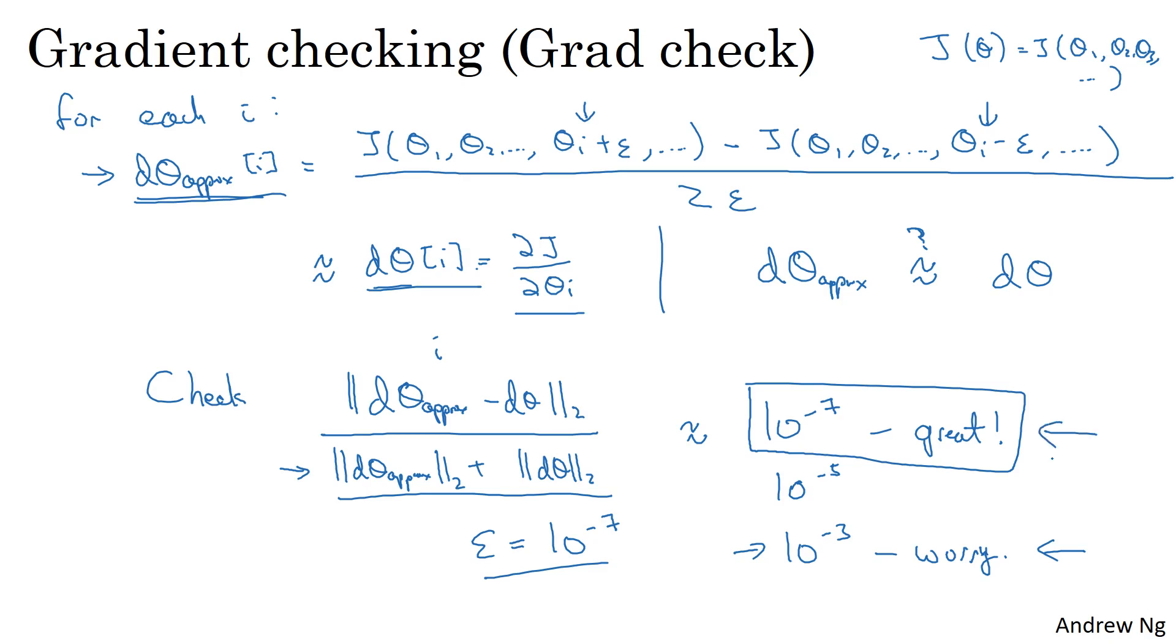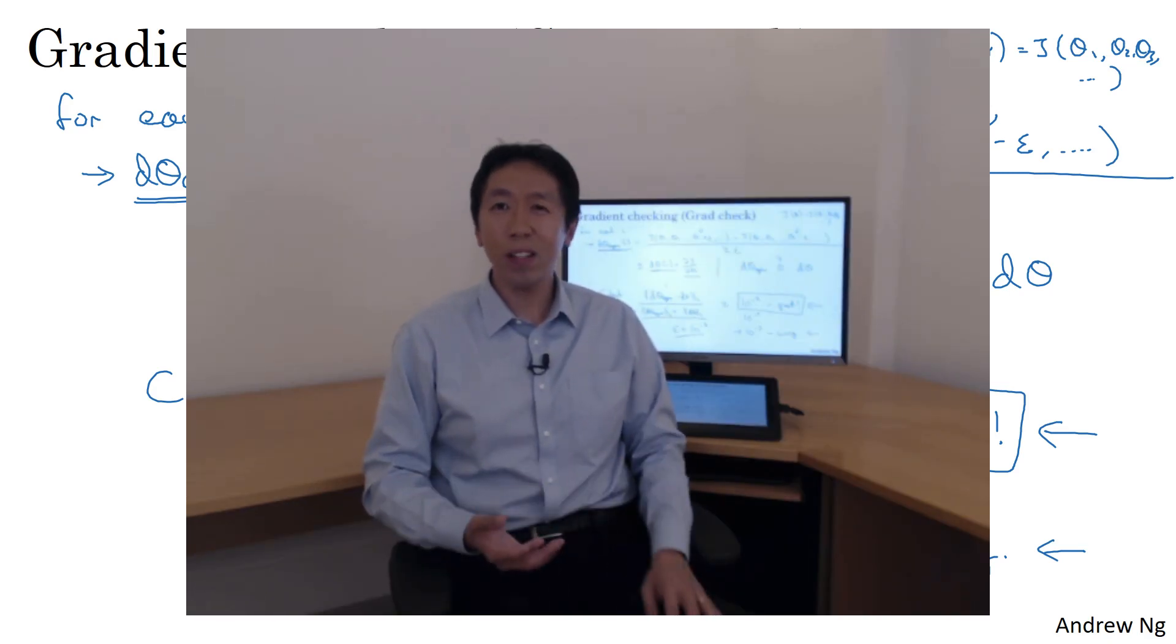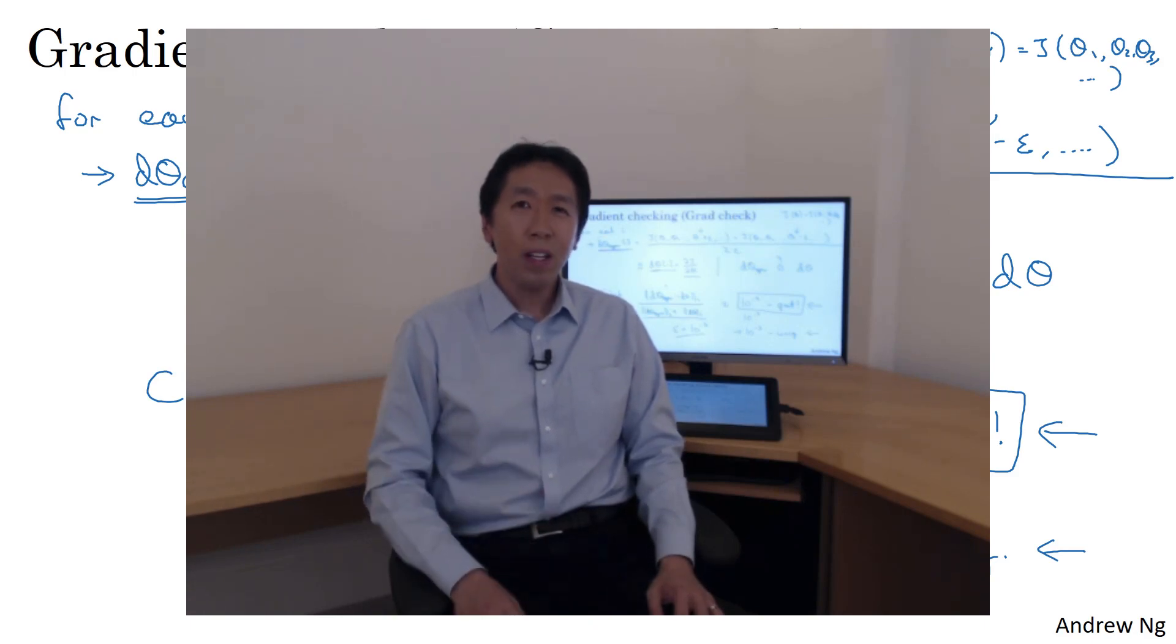So you now know how gradient checking works. This has helped me find lots of bugs in my implementations with neural nets, and I hope it will help you too. In the next video, I want to share with you some tips or some notes on how to actually implement gradient checking. Let's go on to the next video.